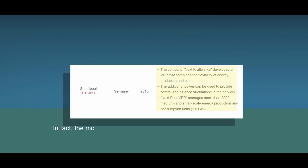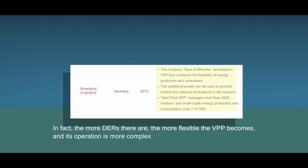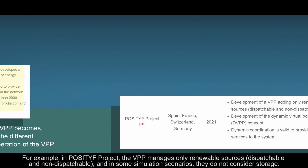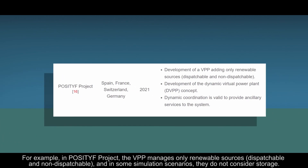In fact, the more distributed energy resources there are, the more flexible the virtual power plant becomes, and its operation is more complex. On the other hand, the different technologies of the distributed energy resources do not impede the optimal operation of the virtual power plant. For example, in the Positive project, the virtual power plant manages only renewable sources, and in some simulation scenarios, they do not consider storage.